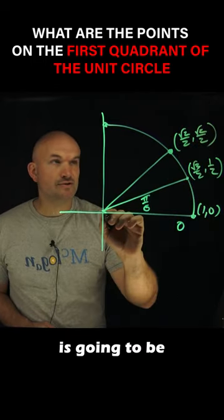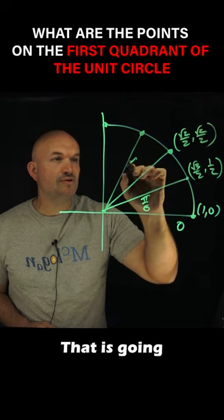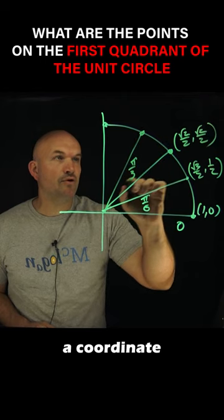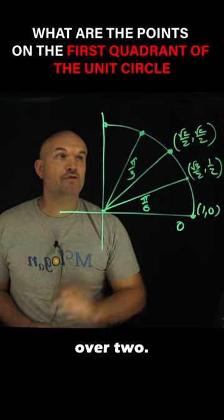The next point is going to be π/3. That is going to have a coordinate point of (1/2, √3/2).